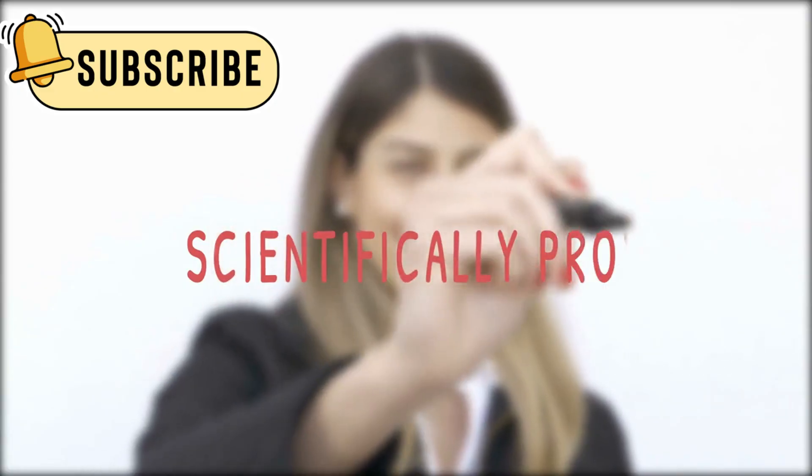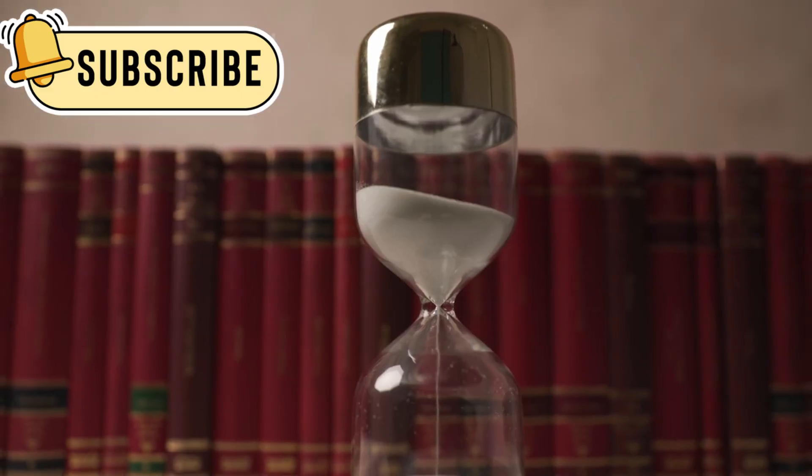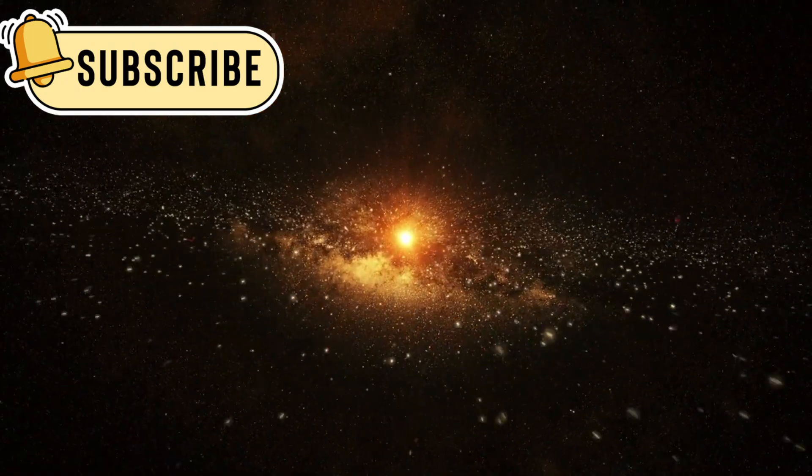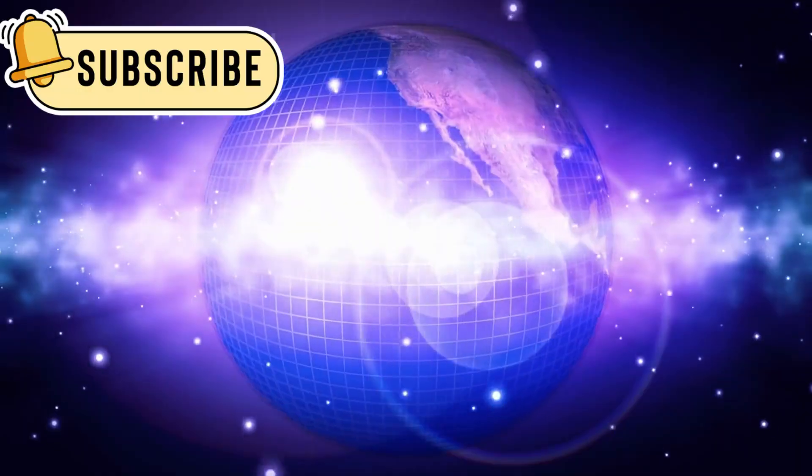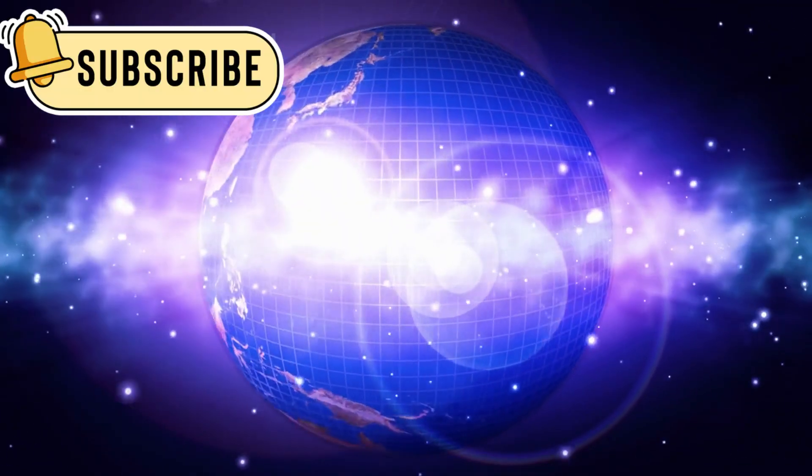This has led some of them to consider a bold idea. What if the universe is actually older than we think? To help imagine this, think of the universe's history as a single year. In this example, the Big Bang would happen on January 1. Earth wouldn't appear until December 31, and human history would last only the last few seconds of that day.